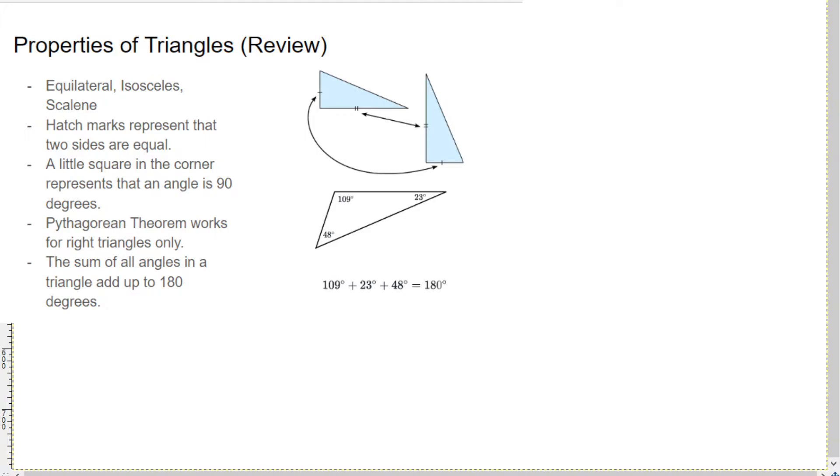And we went over these at the start, but I want to go over them again, because if you don't have these kind of in the back of your mind when you're doing these questions, they become very difficult. So, first you have to know that equilateral, isosceles and scalene triangles are three different types of triangles. Equilateral, all the sides are the same, isosceles, two of the sides are the same, and scalene, all of them are different.